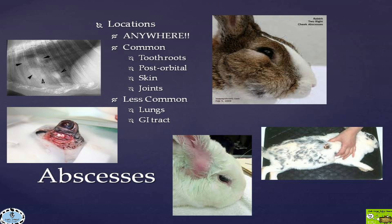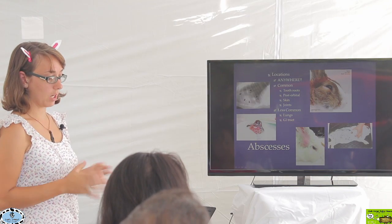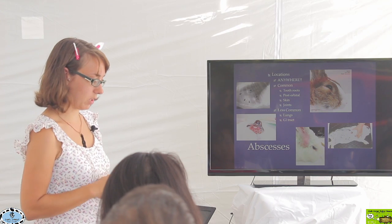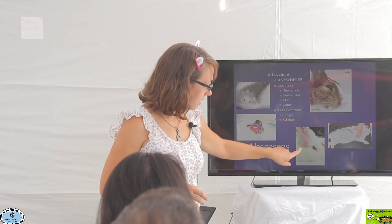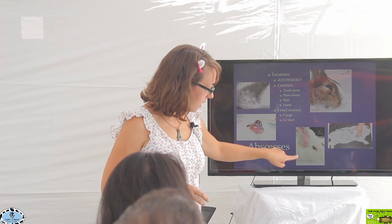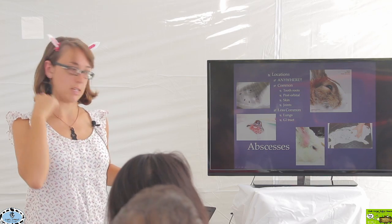The gastrointestinal tract is another less common but certainly possible location for abscesses. This is an example of a rabbit with an abscess at the base of the ear — the fur is shaved from the side of the ear and you can actually see a little swelling on the side where the abscess is.